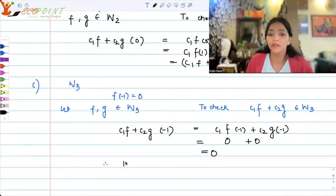So therefore, W₃ is also a subspace of the vector space provided to us, V.